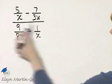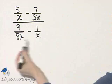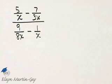Look at the denominators: x, 3x, 8x, and x. What is the least common denominator for those four denominators? It is 24x.